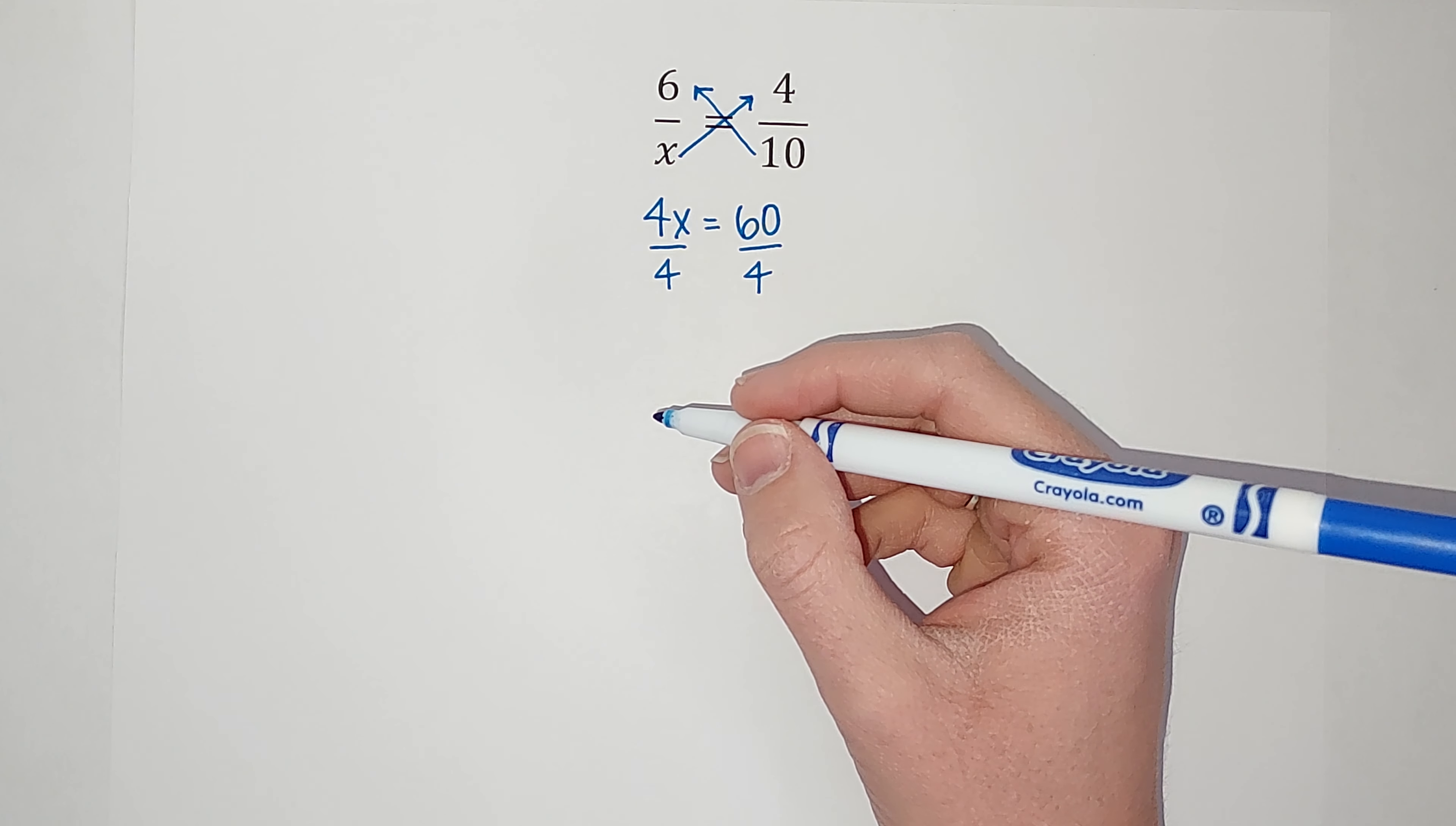Which you might be like, those don't look like they're the same. What you can do is go into your calculator, do 6 divided by 15 and see what decimal you get, and then do 4 divided by 10 and see what decimal you get, and it should be the same. All right, hopefully that makes sense.